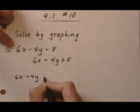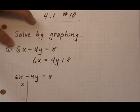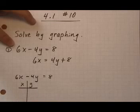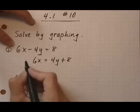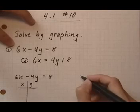So we've got 6x minus 4y equals 8, and let's set up an xy chart and find a couple of points, and then we'll graph them. We're going to do the same to equation number 2, and we will find some points to graph for that one.